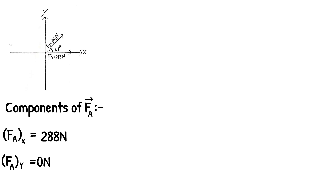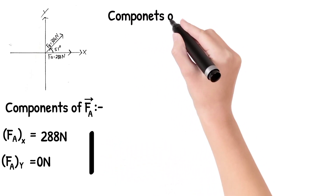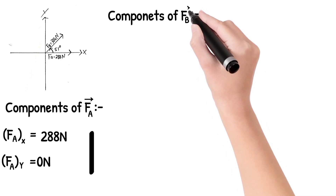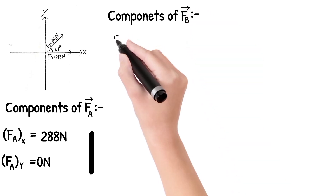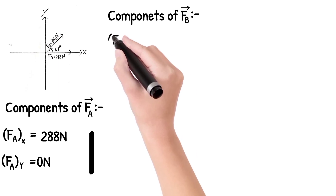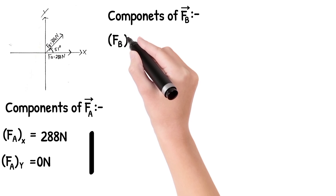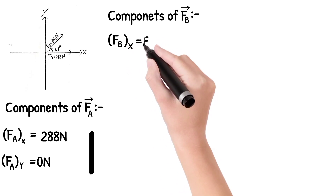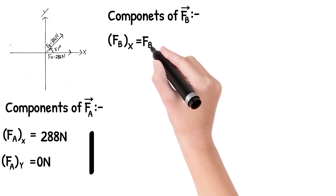We call Fb. Fb is a vector. It is a vector in the xy-plane. If we take this component, we can derive two equations. Let's see how Fb of x is defined. Fb of x is equal to Fb cos theta. That's the equation.